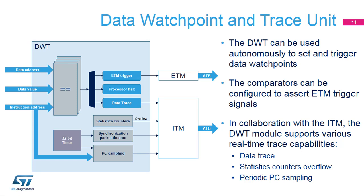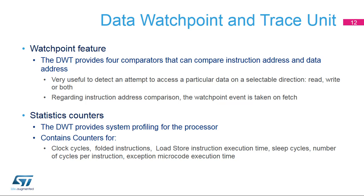The ETM requires the 4-bit data trace port because the SWO does not offer enough bandwidth. Unlike the ITM, no code instrumentation is needed. Taken branches and exception events are signaled by the Cortex-M4 core to the ETM unit, which converts them into trace packets output onto the ATB port. When the trace has been captured, the debugger decompresses it to provide a full disassembly with symbols of the code that was executed. The debugger also links this back to the original high-level source code, providing a visualization of how the code was executed on the target. The ETM is useful to provide the code executed by the Cortex-M4 and to investigate complex software bugs.